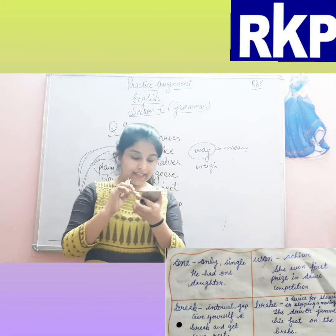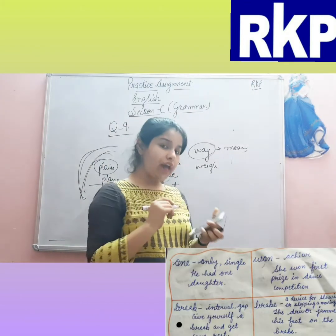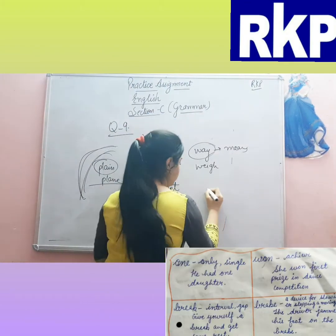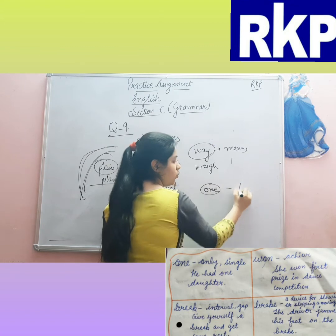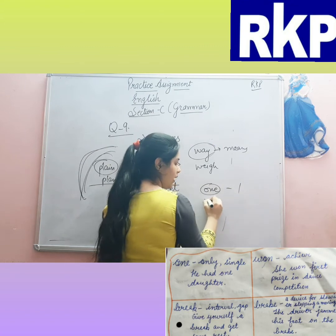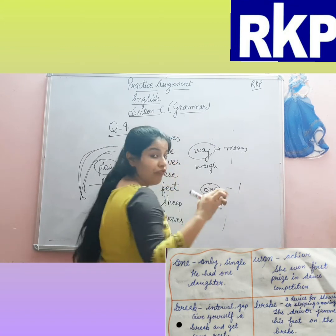Next: 'one' — the number one. And 'won' — means to win, the past tense of win. These are homophones.